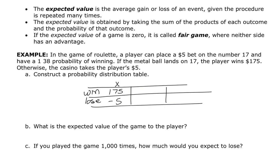The probability of the event happening that you win is 1 in 38. As a decimal, that is 0.0256. The probability of losing is 1 minus 1/38, which is 0.9744. So you have a 97% chance of losing and a 2.5% chance of winning.